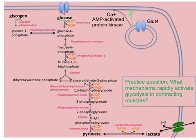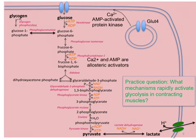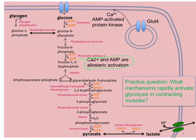Additionally, glycogen phosphorylase is also activated by both increased calcium and increased AMP inside muscle cells. And lastly, calcium and AMP are both allosteric activators of the enzyme phosphofructokinase-1. They can greatly increase by up to about 1,000-fold the activity of this enzyme and really increase flux through glycolysis.